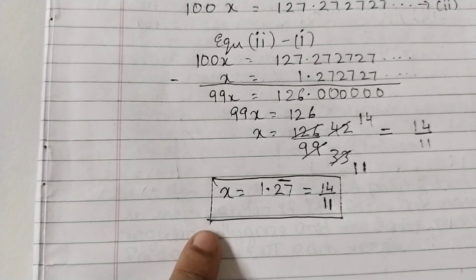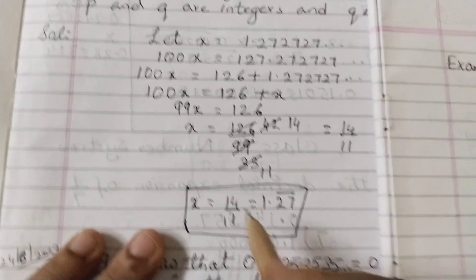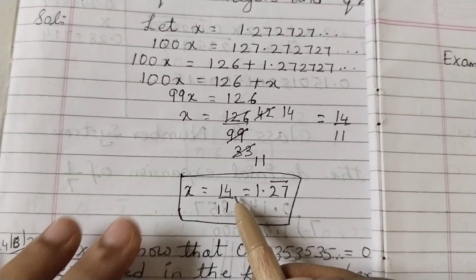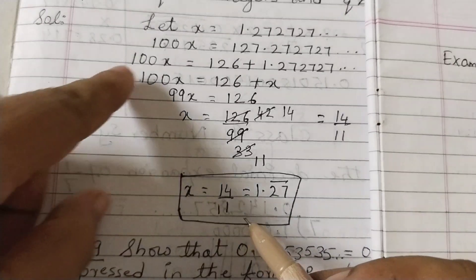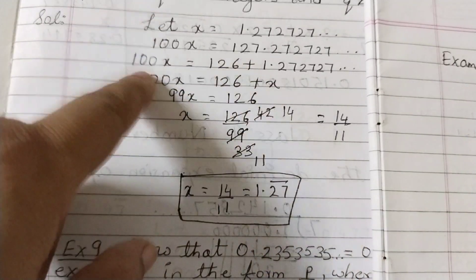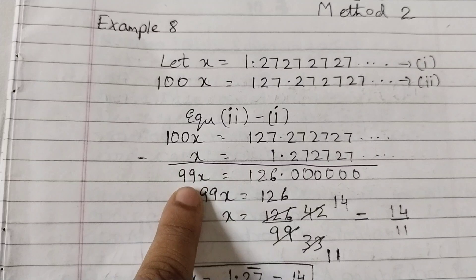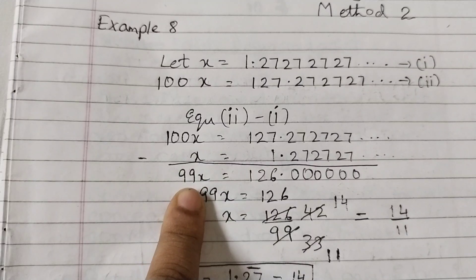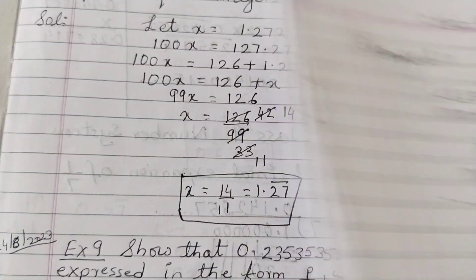You can see this matches the answer from the first method — 14 over 11. That was the first method, and now I'm showing you the second method. Using this same second method, I'm going to show you one more example.